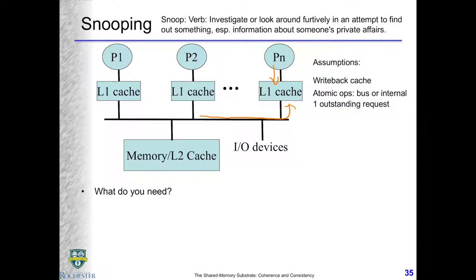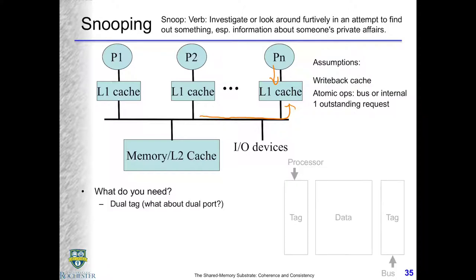This reminds you of something from basic superscalar microprocessor design. You have two users or multiple users trying to get the same resource. What is the problem? Structural conflict — potential structural conflict. One of the ways to avoid structural conflict is to duplicate your resource. So here is the issue about getting the tag: the processor wants to access it, and the bus also wants to access it.